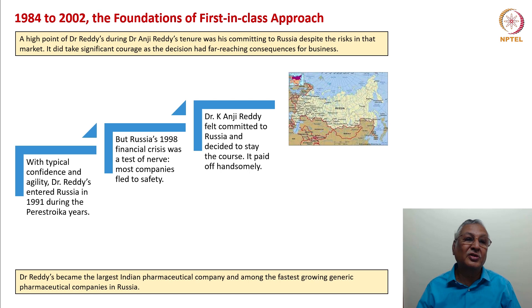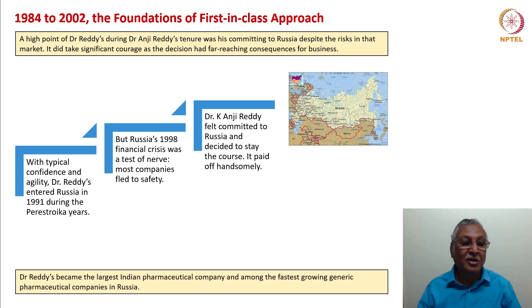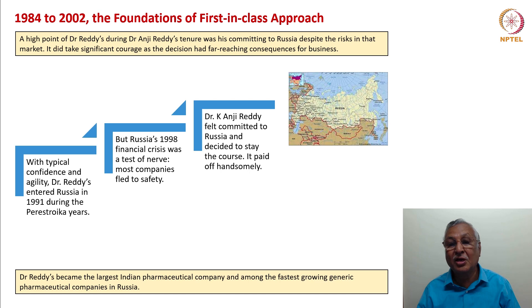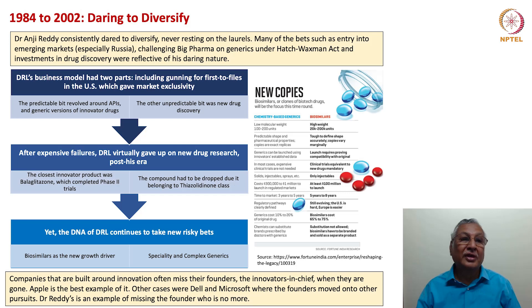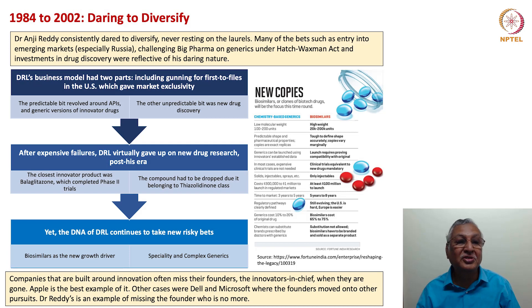The foundations of the first-in-class approach were visible on several other fronts. A high point during Dr. Reddy's tenure was his committing to Russia despite the risks. With typical confidence and agility, Dr. Reddy's entered Russia in 1991 during the perestroika years, but Russia's 1998 financial crisis was a test — most companies fled to safety. However, Dr. K. Anji Reddy felt committed to Russia and decided to stay the course. It paid off handsomely: Dr. Reddy's became the largest Indian pharmaceutical company and among the fastest-growing generic pharmaceutical companies in Russia.